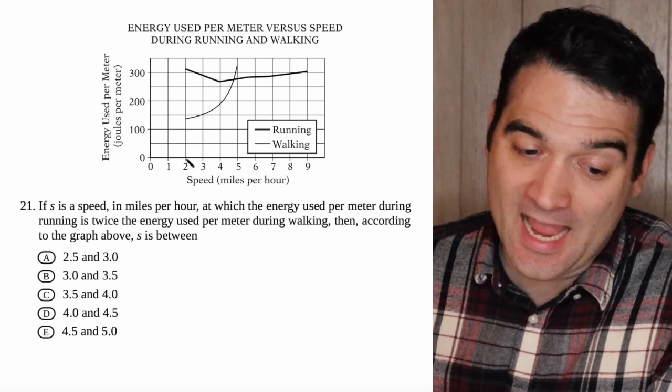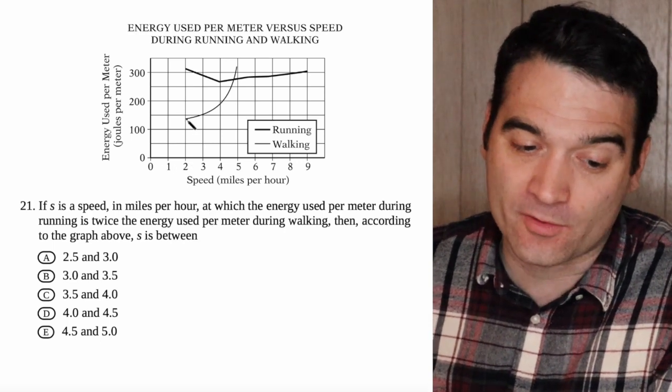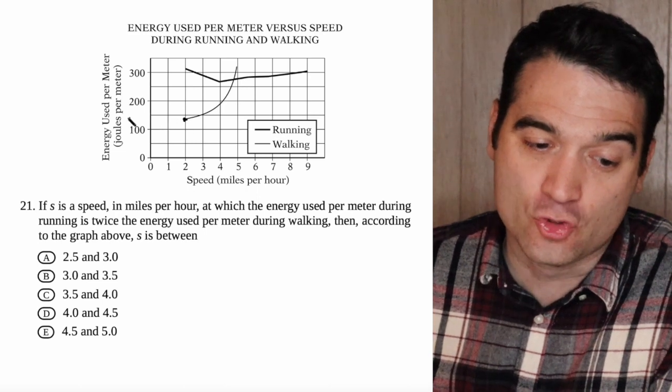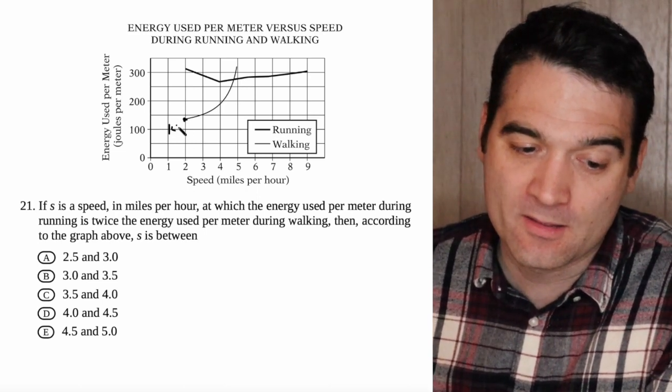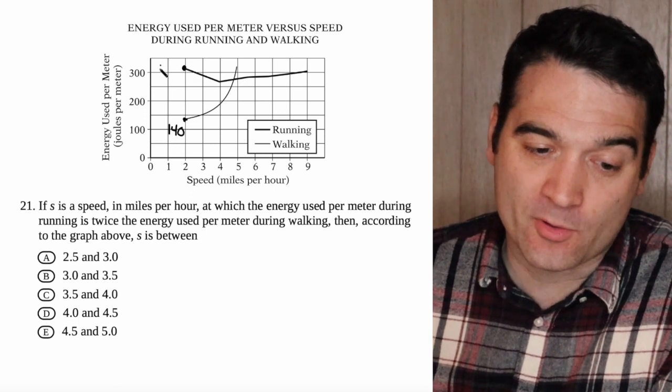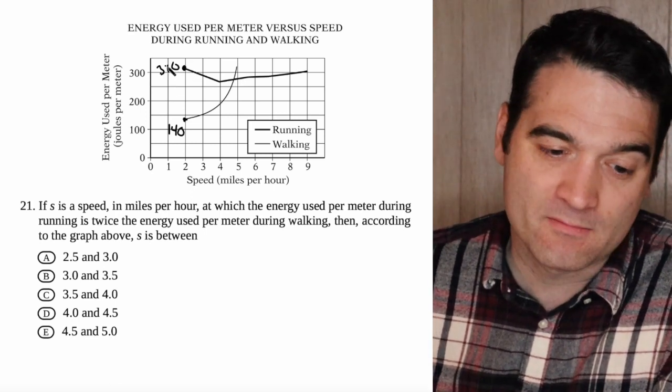So for instance, at 2 miles an hour, for right there, I'm burning about 140 joules per meter when I'm walking. That's 140. And at 2 miles an hour when I'm running, I'm burning about 310 joules per meter.